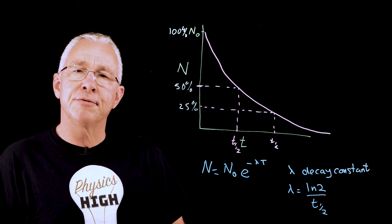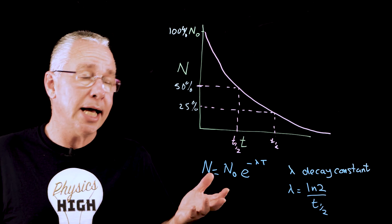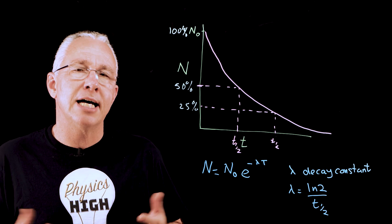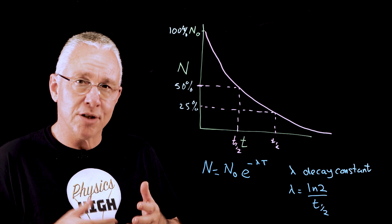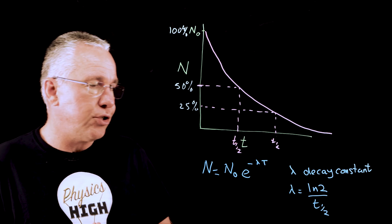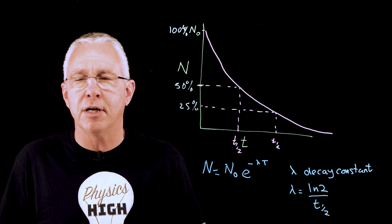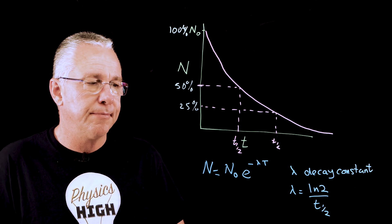Now, it goes to show that if something has a high decay constant, it means it's decaying quickly, which means its half-life is shorter. And that's confirmed by our mathematical relationship here, because there is an inverse relationship between the half-life and the decay constant.